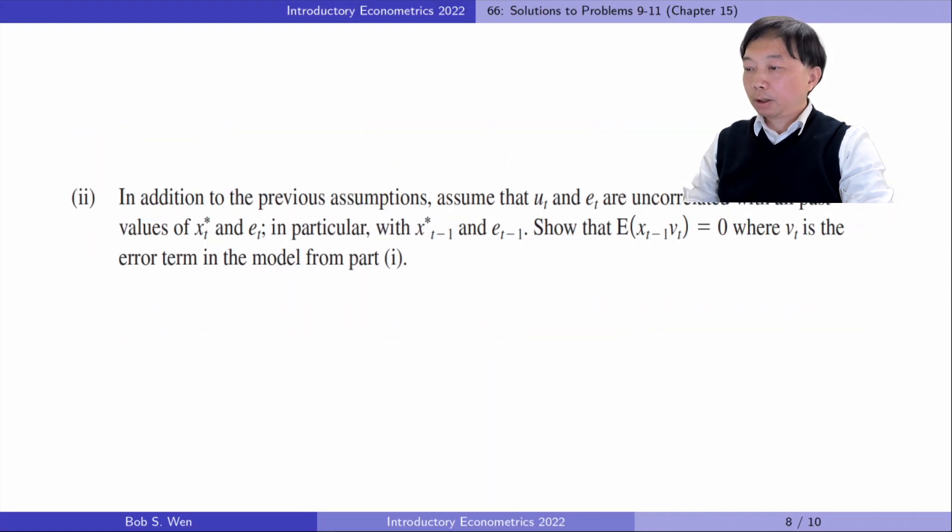In part 2, in addition to the previous assumptions, assume that μt and et are uncorrelated with all past values of xt star and et, in particular with xt minus 1 star and et minus 1. Show that the expected value of xt minus 1 times νt is zero, where νt is the error term in the model from part 1. The proof is as follows.